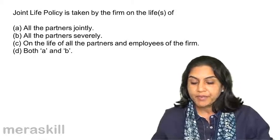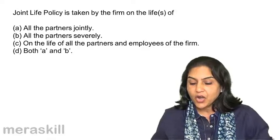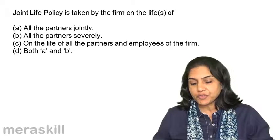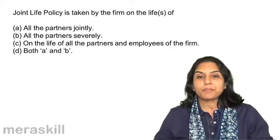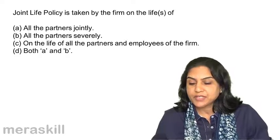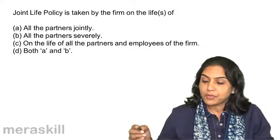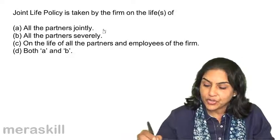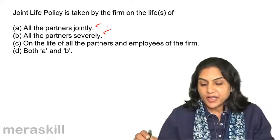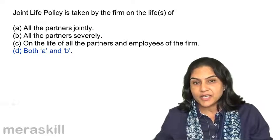A: All the partners jointly. B: All the partners severally. C: On the life of all the partners and employees of the firm. D: Both A and B. Joint life policy is taken by the firm on the life of all the partners jointly and severally. So both A and B. The correct answer is D.